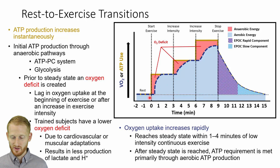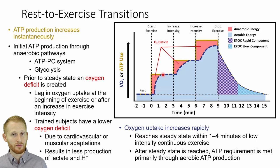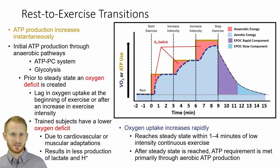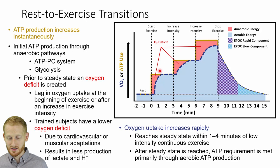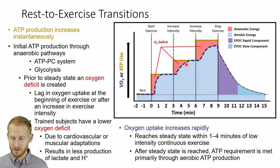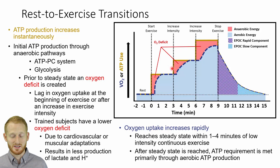Notice this blue dotted line — our oxygen consumption — has a little bit of a delay, but it eventually reaches what is necessary to perform all this exercise with aerobic metabolism. We have this period where anaerobic metabolism has to take over. This delay in oxygen consumption causes what we call the oxygen deficit — the period after we increase exercise intensity, between that and whenever aerobic metabolism catches up to fully support the exercise load. If we increase intensity again, we get another oxygen deficit, and eventually VO2 catches up and supplies 100% of the energy needs.